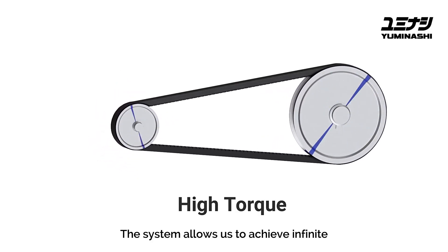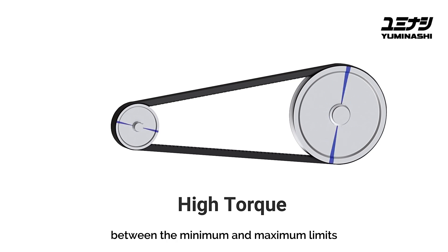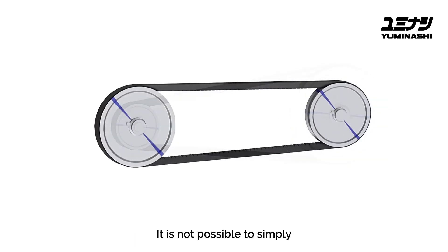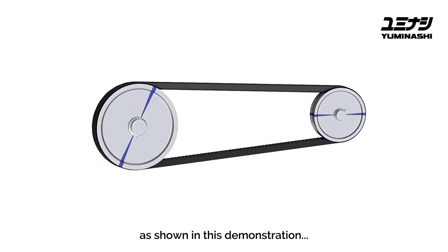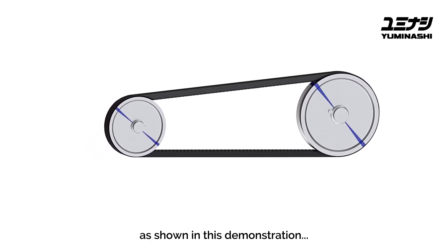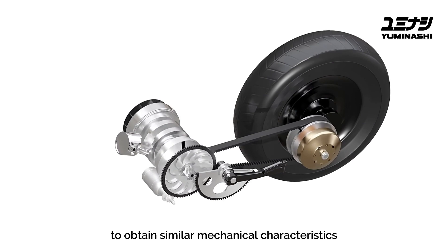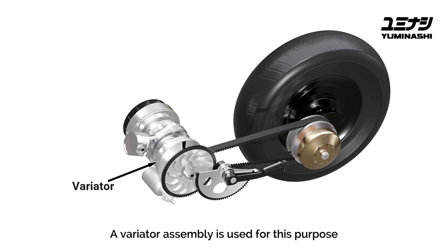This system allows us to achieve an infinite number of drive ratios between the minimum and maximum limits. It is not possible to simply change the diameters of solid pulleys as shown in this demonstration, so engineers developed certain mechanisms to obtain similar mechanical characteristics. A variator assembly is used for this purpose.